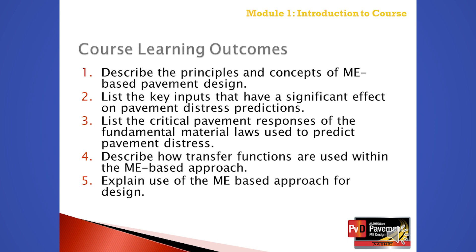The third learning outcome is to list the critical pavement responses included in the fundamental material laws used to predict pavement distress. This outcome is covered under modules five and six of segment two, as well as under modules seven, eight, and nine for rehabilitation design in segment three. The fourth learning outcome is to define and describe the transfer functions and how they are used within the mechanistic empirical based approach, covered under module two of segment one and modules five and six of segment two. The fifth learning outcome is to explain use of the mechanistic empirical based approach for pavement design, covered throughout the course in all segments.